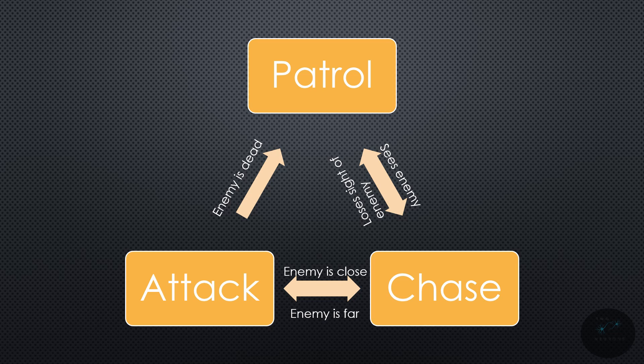This all seems fairly simple, right? We're making decisions based on certain conditions on what we are going to do. There are a finite number of states — in this case, three states. There are conditions to transition between the states that the AI is going to adhere to.